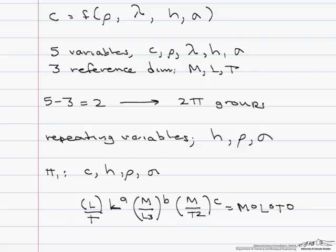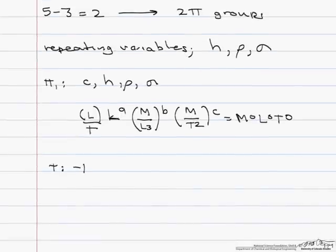So let's first do a T balance. So minus one, minus two c, because that's where we get our T from, and it's on the bottom, has to equal zero,